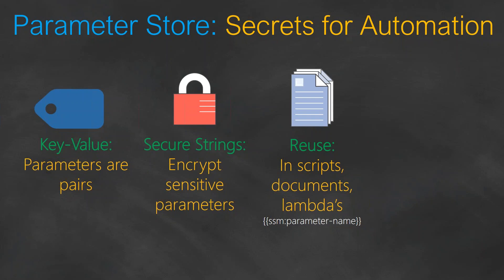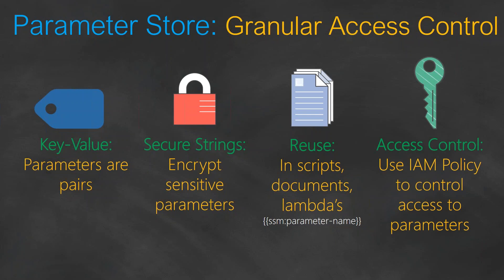Parameter Store allows you to use IAM policies to provide fine-grained access control. For example, user A will have access only to API keys, database administrators will have read-only access to view keys but not modify them, and your system monitoring team may have no access or privileges on the parameter store at all. These are the different access control functionalities offered.